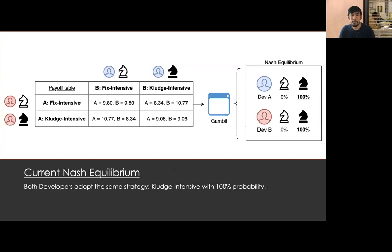When the simulation model is ready, we use it to populate the payoff table. After feeding the payoff table to a game solver like Gambit, we see that at equilibrium both developers adopt a kludge-intensive strategy with 100% probability, matching what was reported by Labagier and Robillard. This payoff table shows similarities with the model generated for the freelancer dilemma — developers would deliver more features if they adopted the fix-intensive strategy, but this strategy is absent at equilibrium.